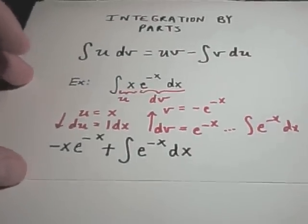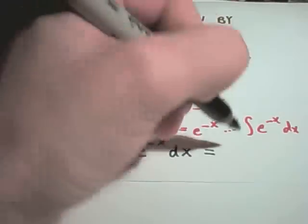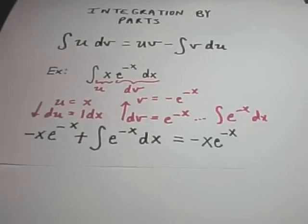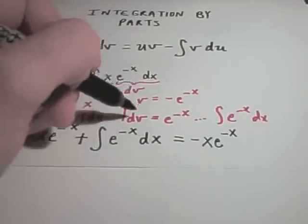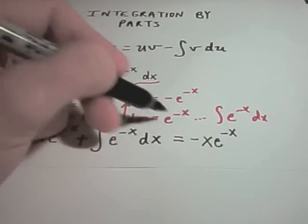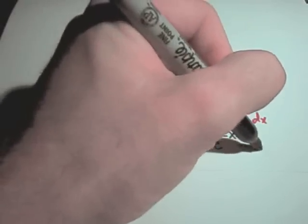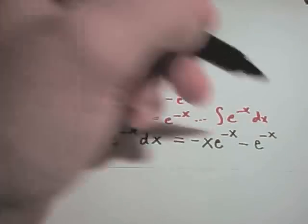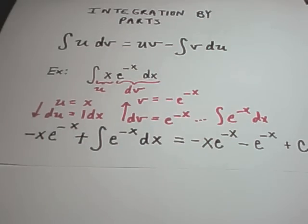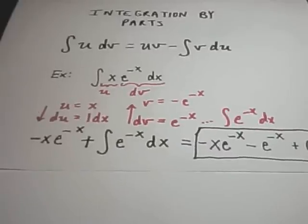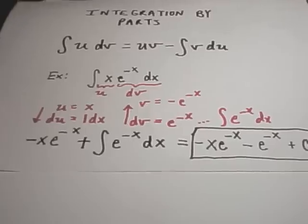Now if I finish off this integration, I've got my negative x, e to the negative x. I'm done with that part. We've actually already integrated e to the negative x. That's what we did to calculate our v term in the first place. If you integrate e to the negative x, you get negative e to the negative x. And then we simply tag on our plus c term. We have now used integration by parts to calculate the integral of x e to the negative x.